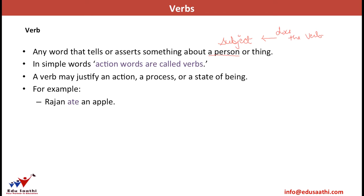For example, 'Rajan ate an apple.' First, we locate the nouns: Rajan and apple. Who is doing something — who is basically working in this sentence? Obviously, Rajan is working, so Rajan becomes the subject. And what is he doing? He is eating because he ate. So the word that justifies the action done by Rajan — whatever he did — is 'ate.' Ate becomes the verb.